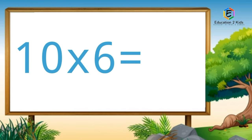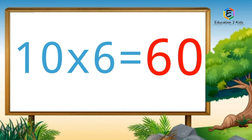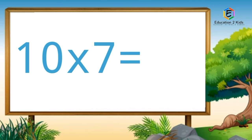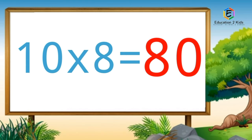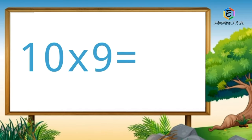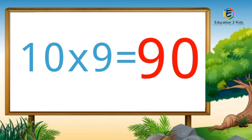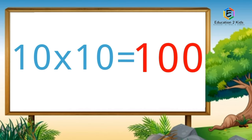Ten sixes are sixty. Ten sevens are seventy. Ten eights are eighty. Ten nines are ninety. Ten tens are hundred.